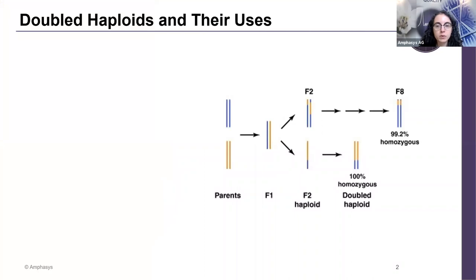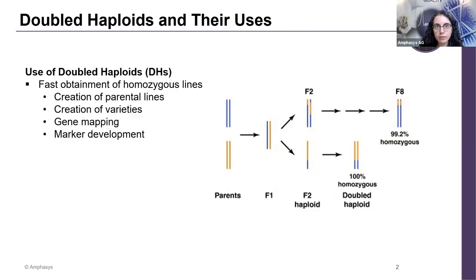To begin, I'd like to set the base for the rest of the presentation by giving you a short definition of double-haploids. Double-haploids, also called DH, are diploid plants where the two chromosome sets are identical copies of one another. This means that these plants are entirely homozygous, and this is obtained with the duplication of the haploid genome. Double-haploids have become very popular tools in plant breeding and genetic studies in recent years, because they allow for a very quick generation of parental lines for genetic mapping and for marker development.